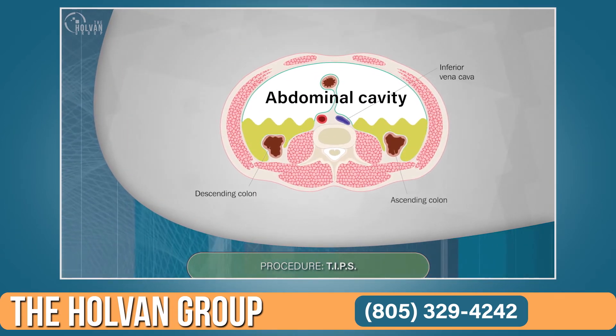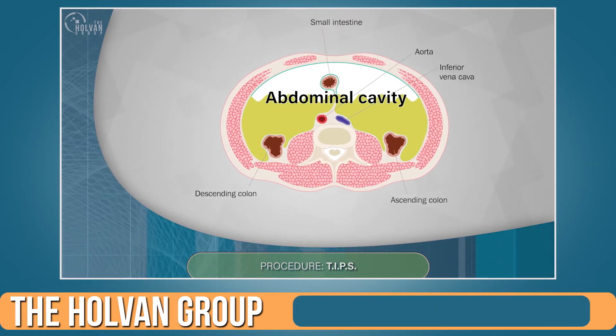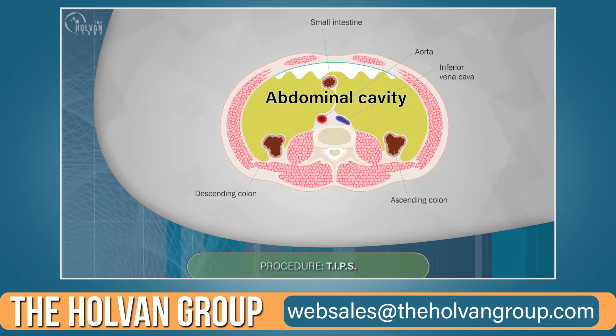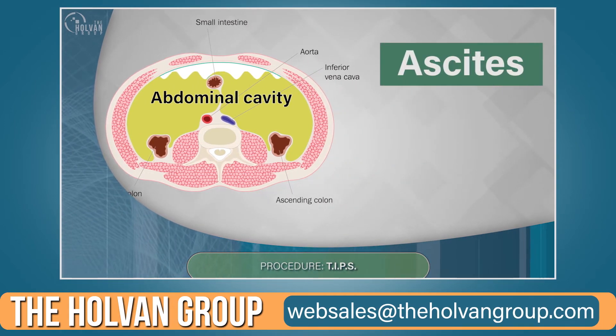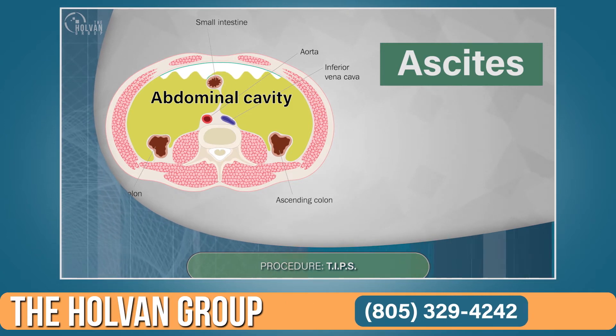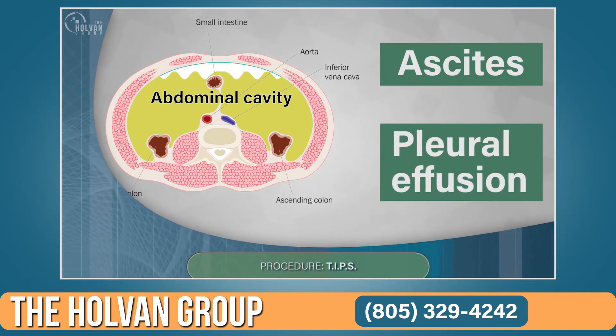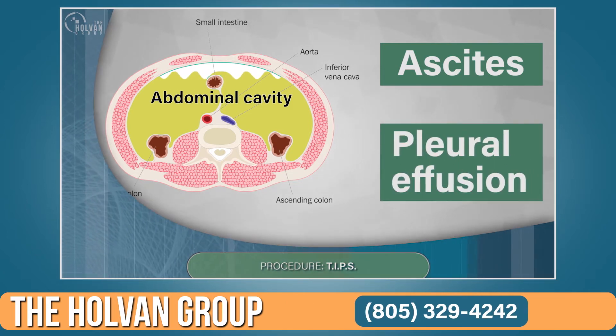The other thing that can happen is that the body weeps fluid into the abdomen and sometimes the chest. In the abdomen, the fluid is called ascites. In the chest, it's called a pleural effusion.